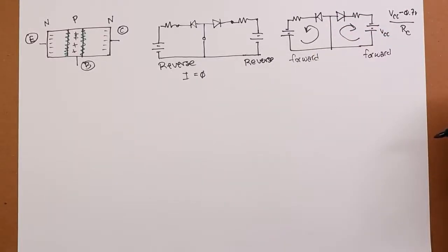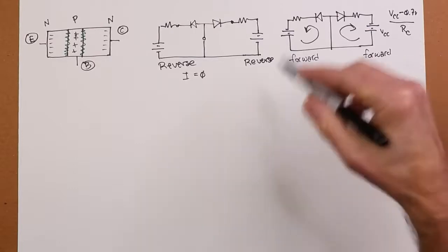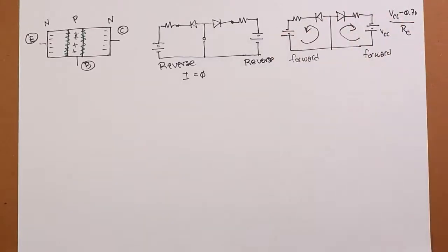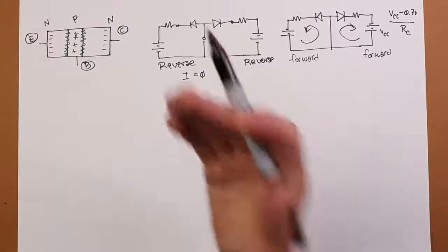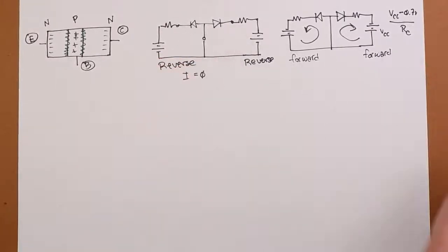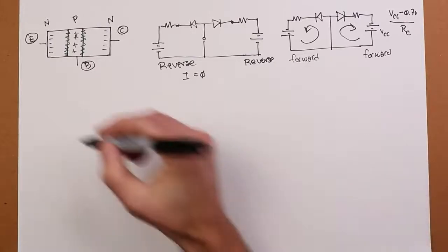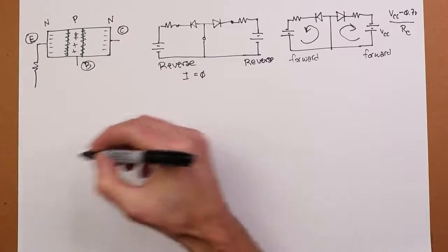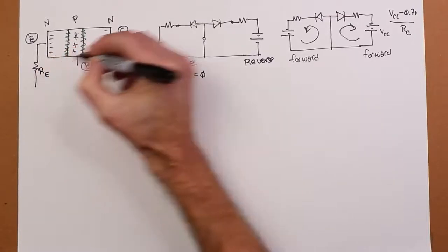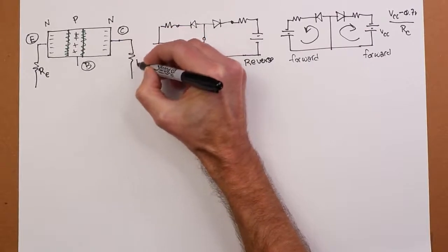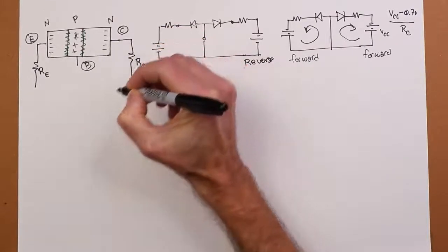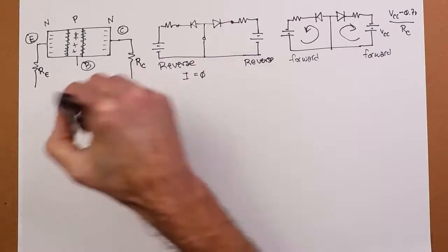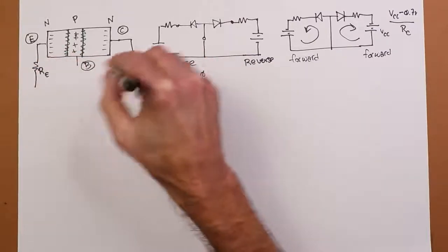All right. So what happens if we have one forward and one reversed? Okay. Now you might expect a small current on one side and a large current on the other. In fact, that doesn't happen. Something entirely different happens.